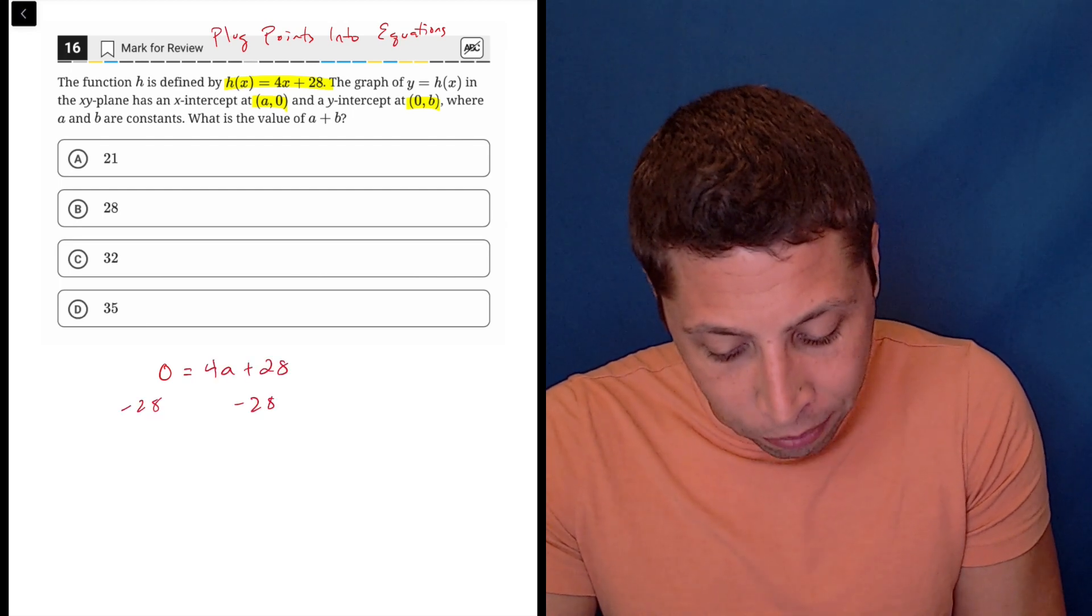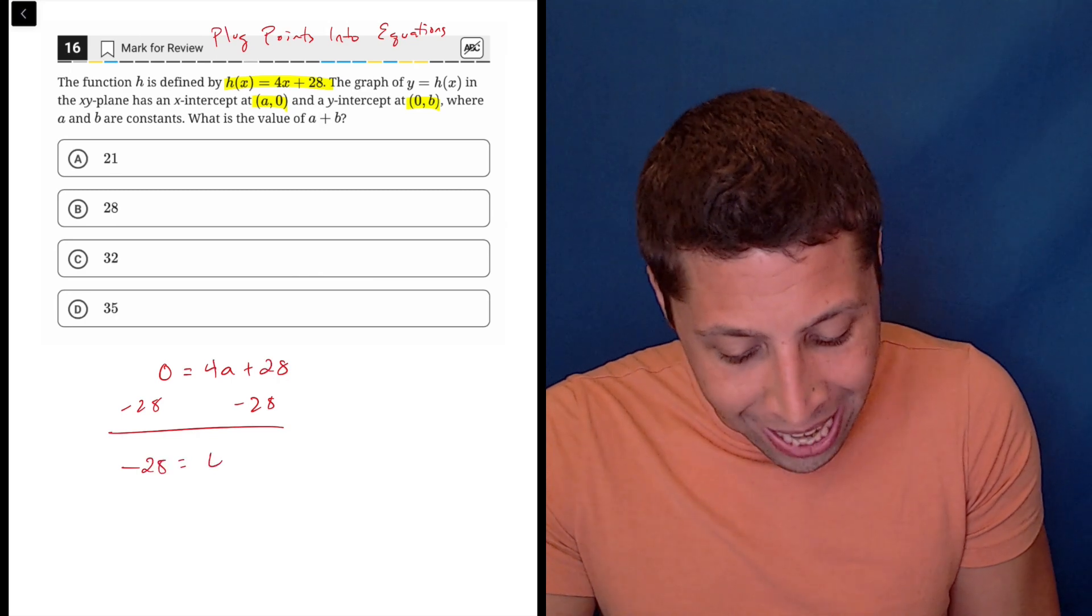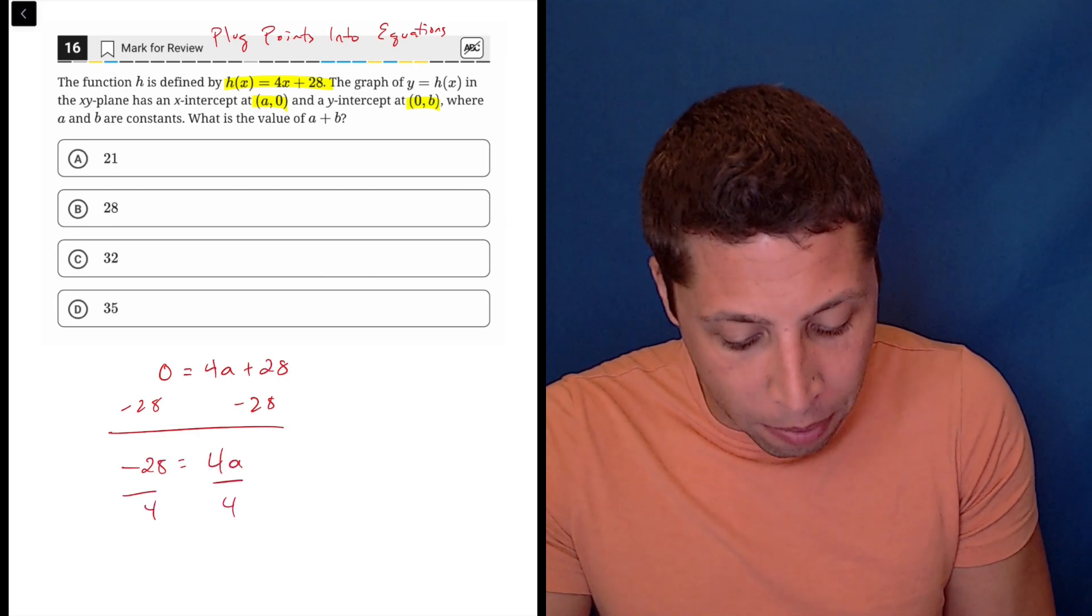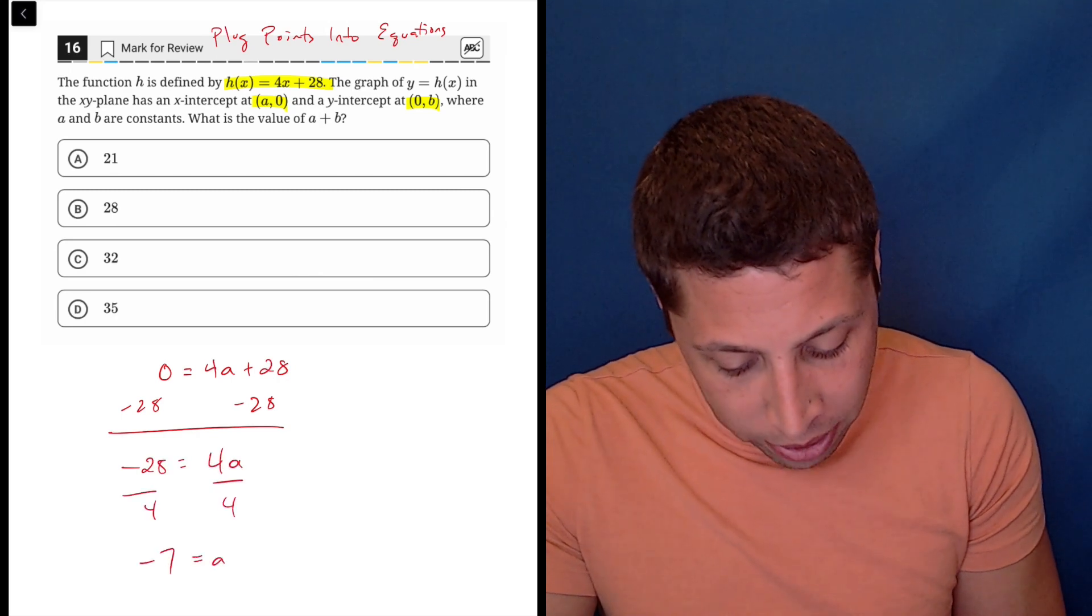I'd subtract 28 from both sides. Negative 28 is equal to 4a, divide by 4, and I get that a is equal to negative 7.